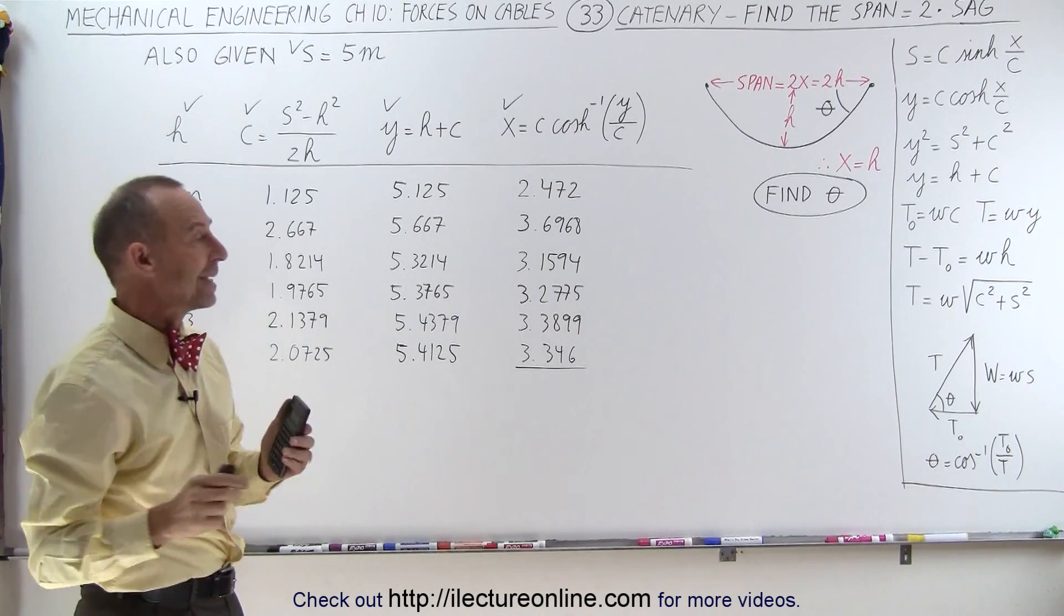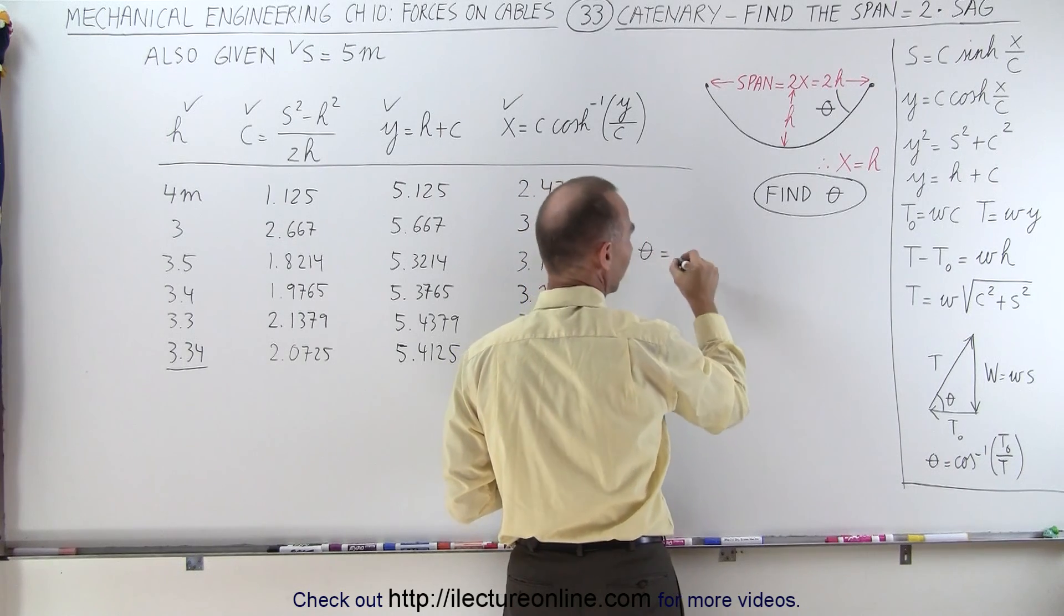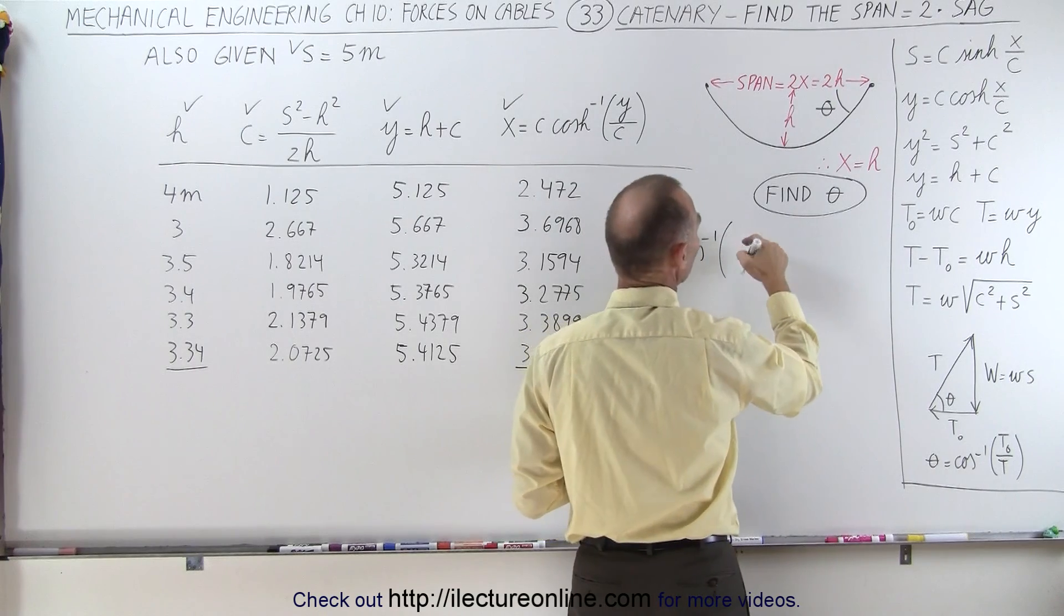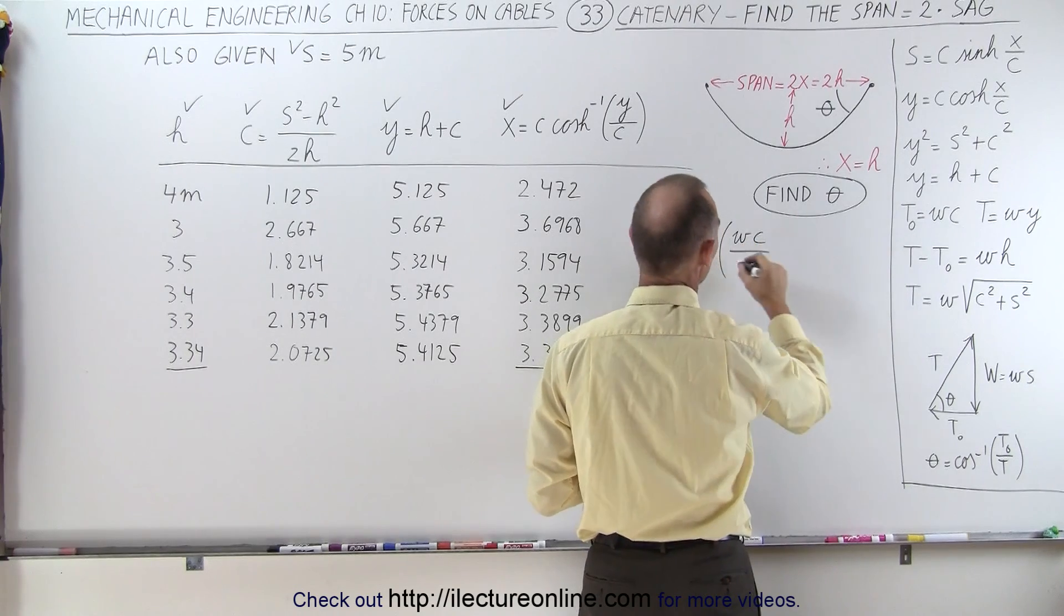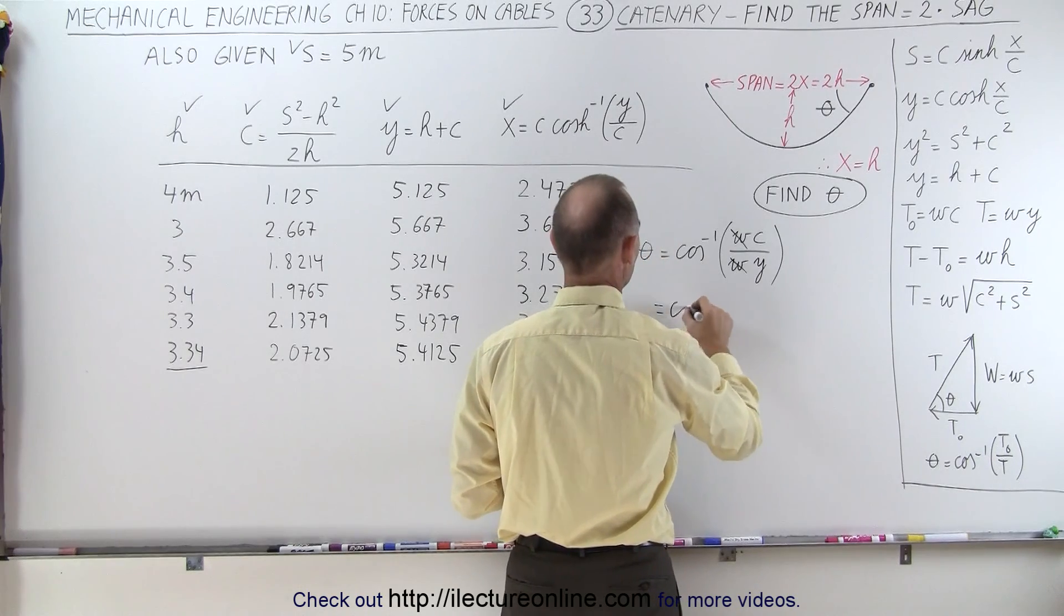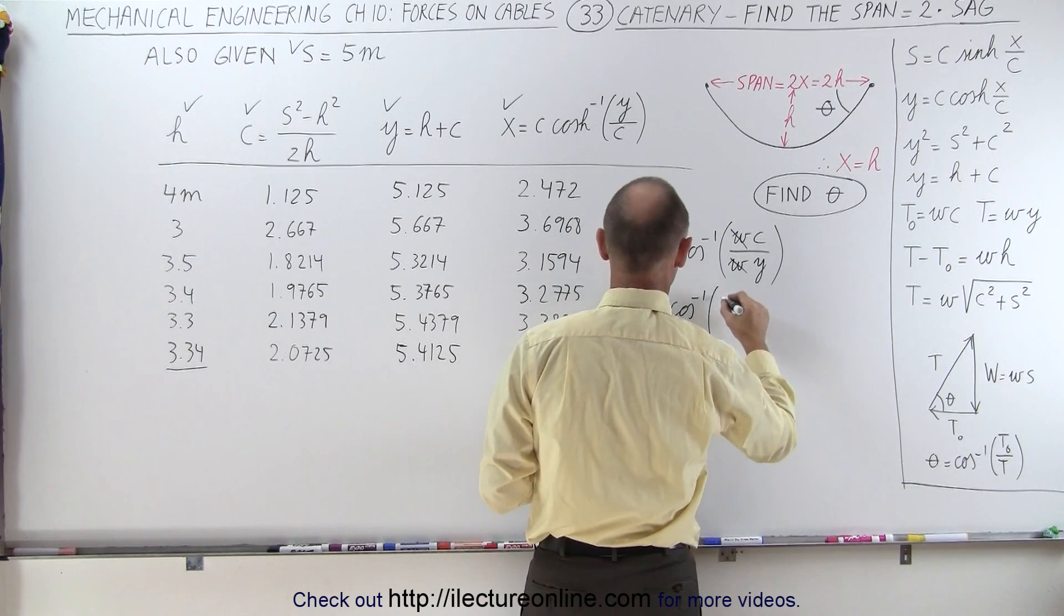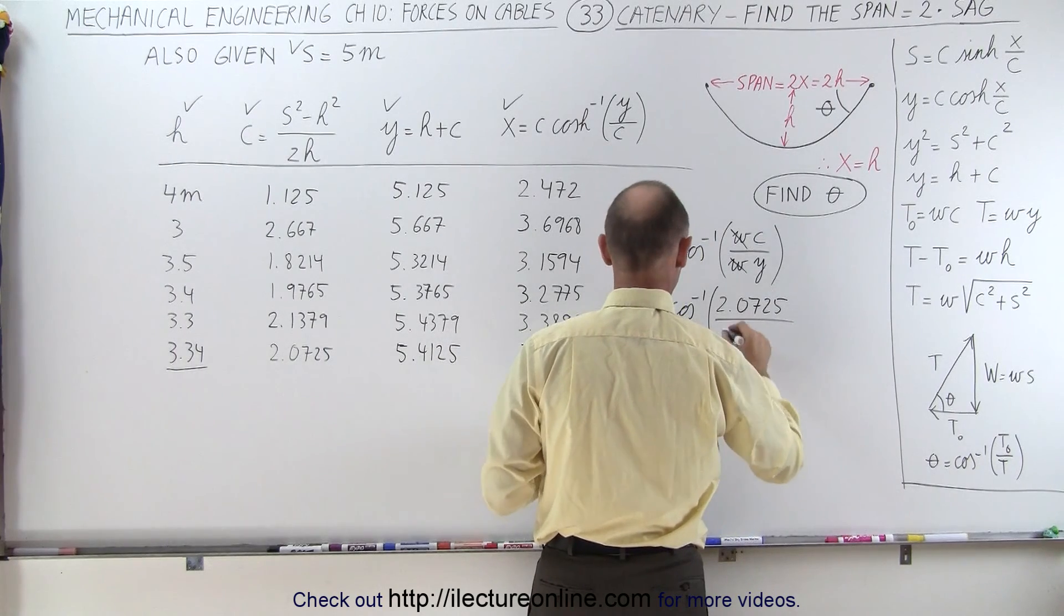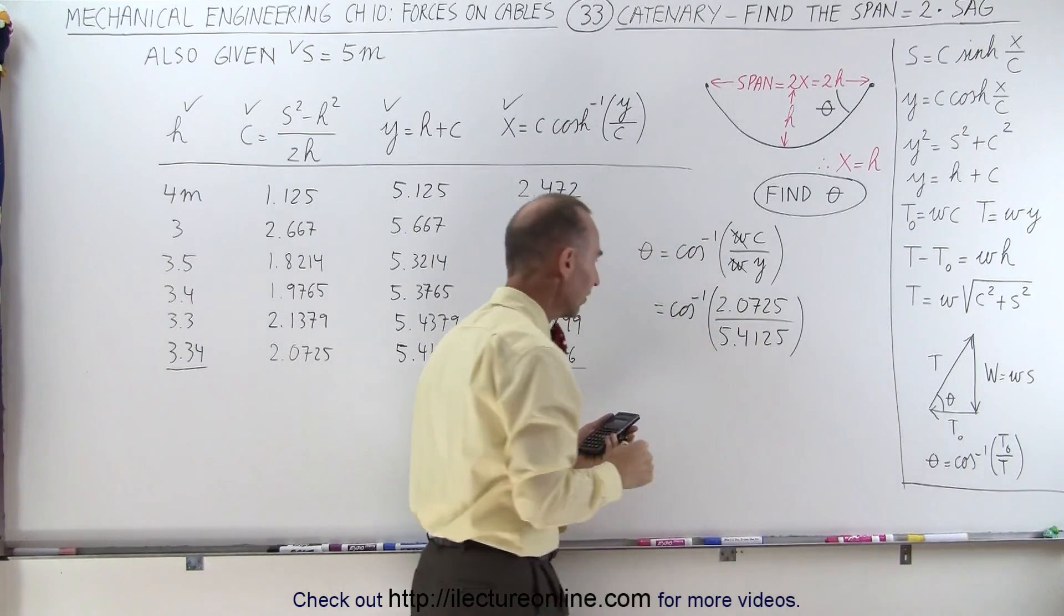Now we're ready to find the angle. So to find the angle, we must find this ratio. So we have theta is equal to the inverse cosine of T sub naught, which would be the weight per unit length times c, divided by T, which is the weight per unit length times y. Of course, that cancels out, which is equal to the arc cosine of c, which we know is 2.0725, divided by y, which is 5.4125.